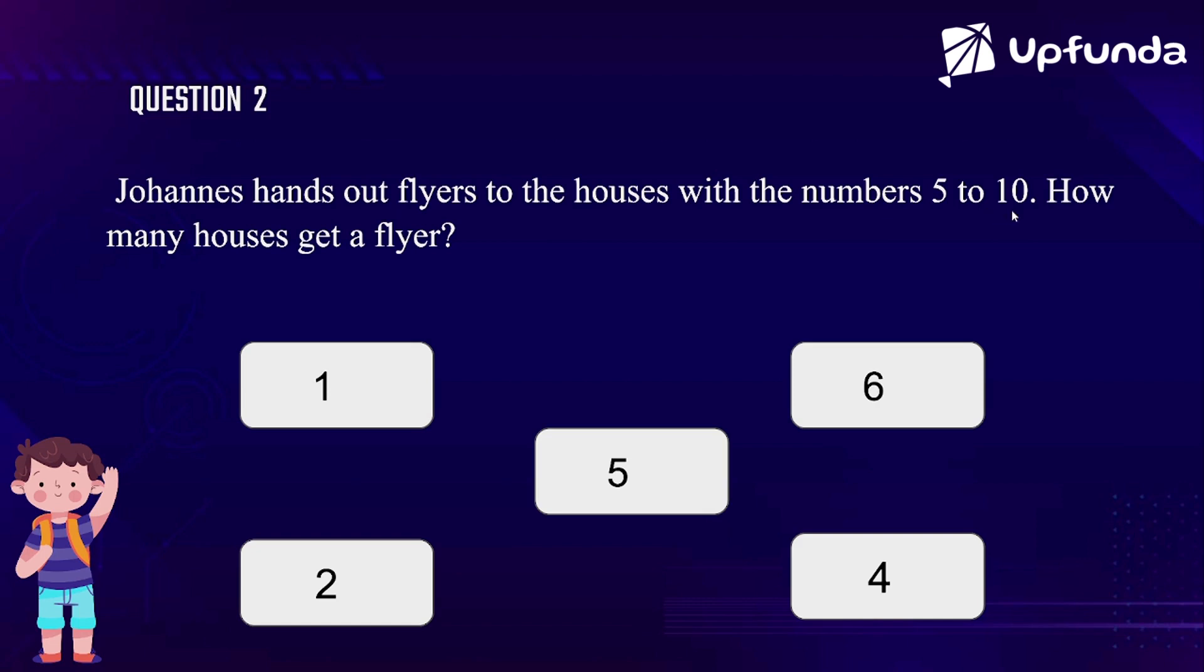When you do 10 minus 5, you will get 5 as the answer, but there are six numbers in this. You should do 10 minus 4 because you are starting from 1 to 10. Before 5 there is a number 4, so you have to subtract till 4 to get the numbers from 5 to 10.